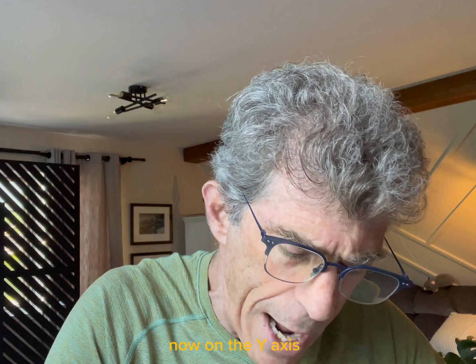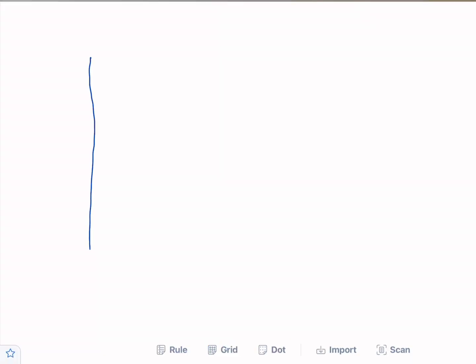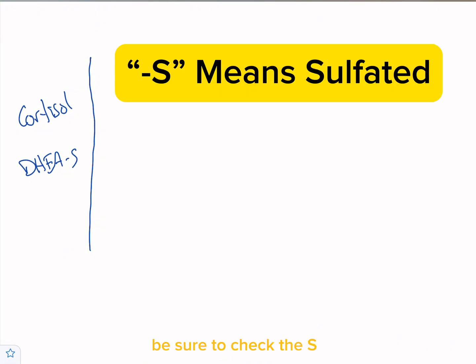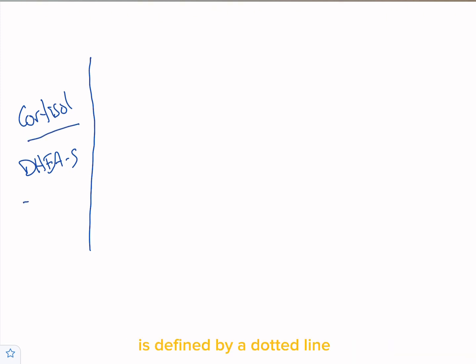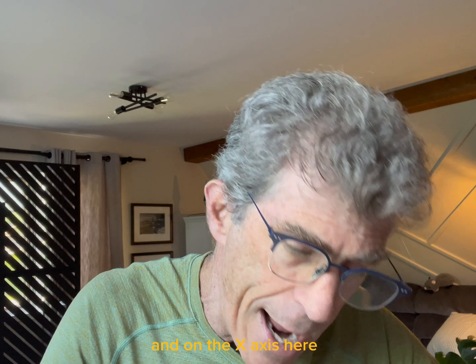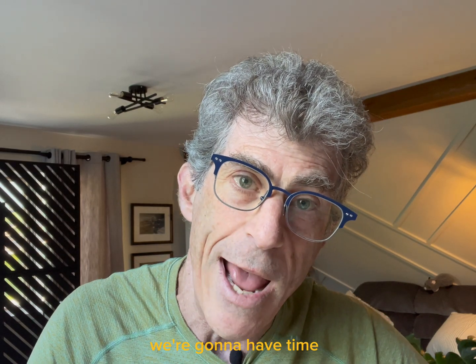On the y-axis we're going to have cortisol and DHEAS — be sure to check the S — this is the sulfated form of DHEA which is made in the adrenal glands. Cortisol is going to be defined by a straight line and DHEAS by a dotted line. On the x-axis we're going to have time.